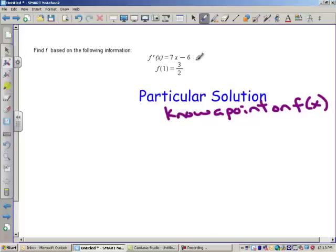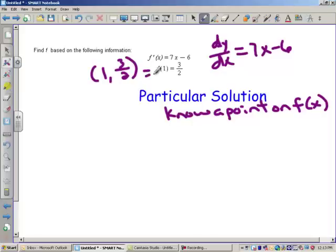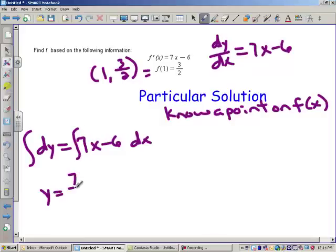So here I know that f prime is 7x minus 6. I'm going to rewrite that as dy dx equals 7x minus 6. So basically here's a derivative of some function. Can we go back and find the particular solution, f of x, that goes through the point 1, 3 halves? It might say it travels through 1, 3 halves. That's the same thing as f of 1 equals 3 halves. Well, let's just separate our variables. The dx goes to the other side. So this is dy equals 7x minus 6 dx. Then we integrate. And so I get y equals 7 halves x squared minus 6x. Don't forget the plus c. You have to have it there.